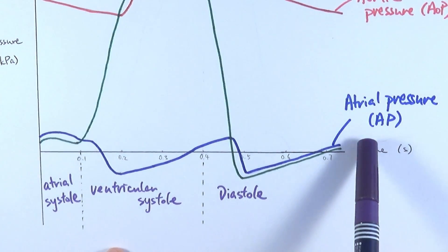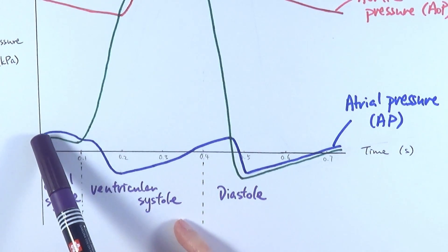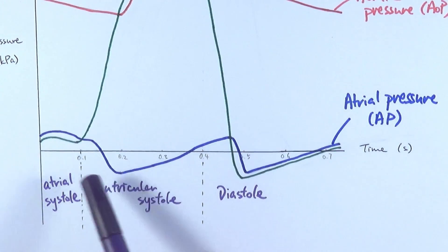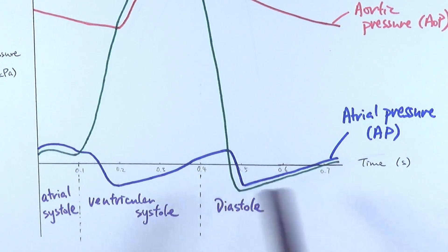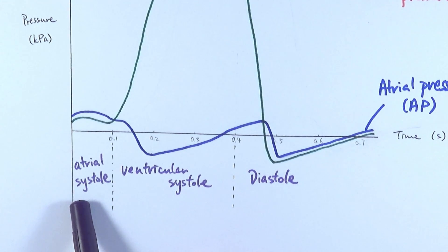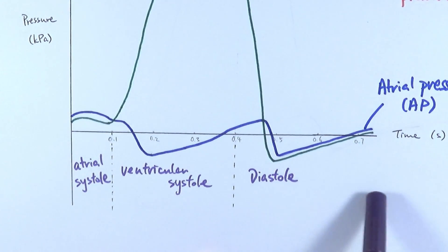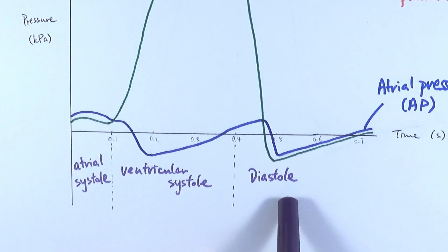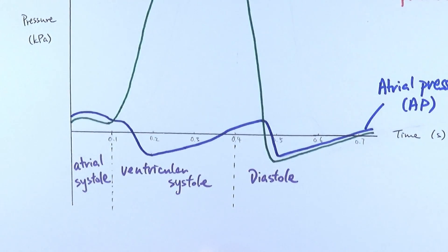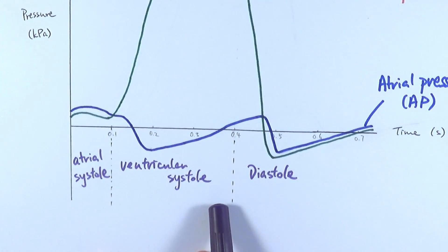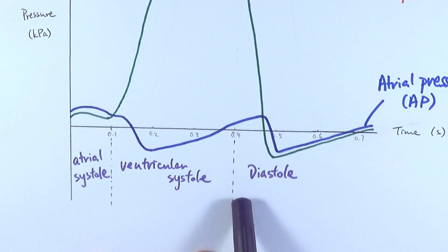After that, you can see the pressure increasing as blood fills into the heart. Then at around 0.8 seconds, atrial systole occurs again for that final push of blood from the atria into the ventricles, and the whole cycle begins again. In summary: atrial systole lasts about 0.1 seconds, ventricular systole roughly 0.3 seconds, and diastole begins at around 0.4 seconds before the whole cycle repeats at 0.7 to 0.8 seconds.